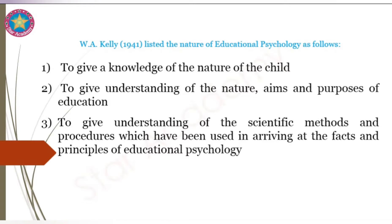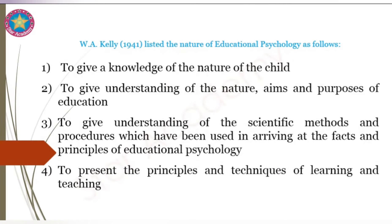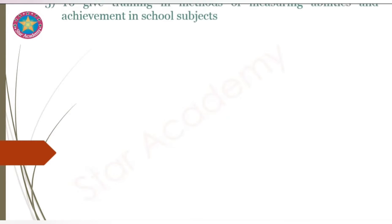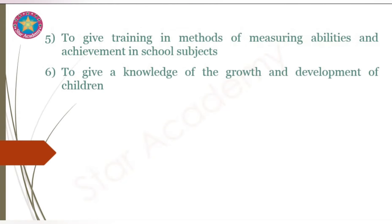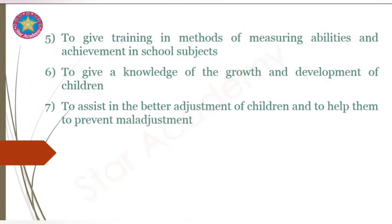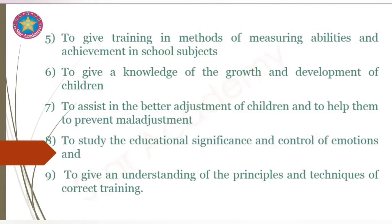Number two, to give understanding of the scientific methods and procedures which have been used in arriving at the facts and principles of educational psychology. Number three, to present the principles and techniques of learning and teaching. Number four, to give training in methods of measuring abilities and achievements in school subjects. Number five, to give knowledge of the growth and development of children. Number six, to assist in the better adjustment of children and to help prevent maladjustment.